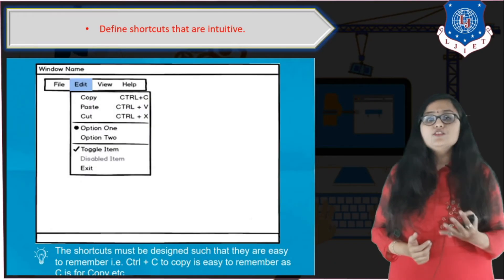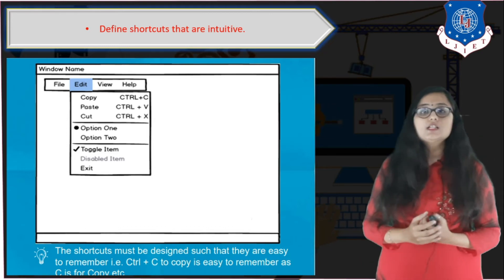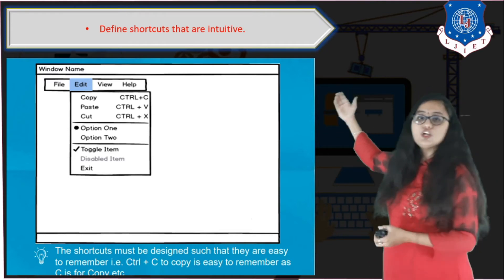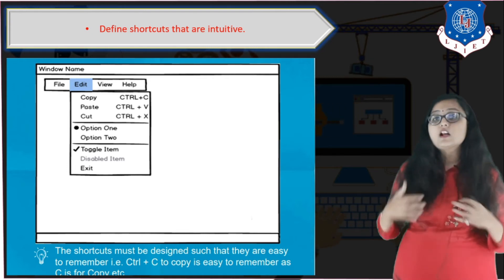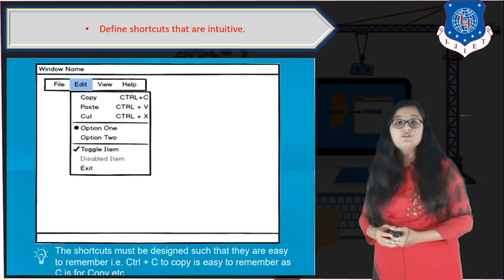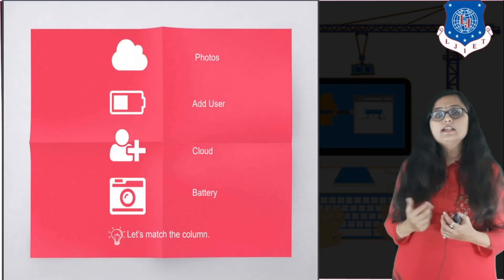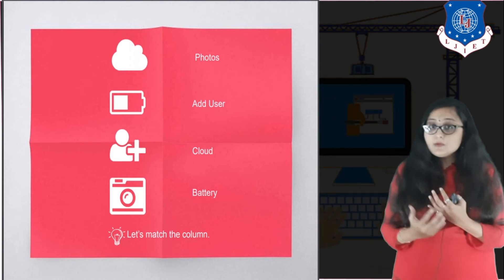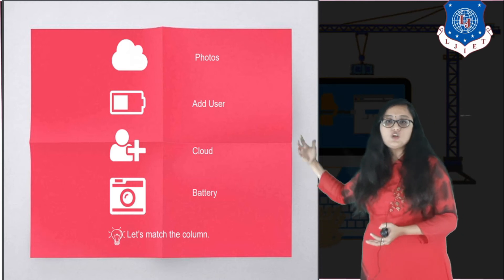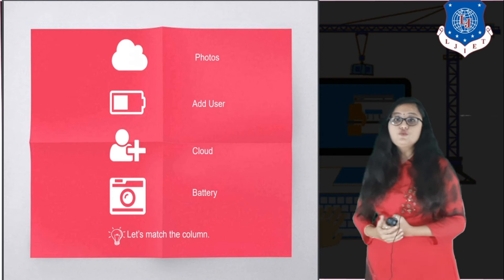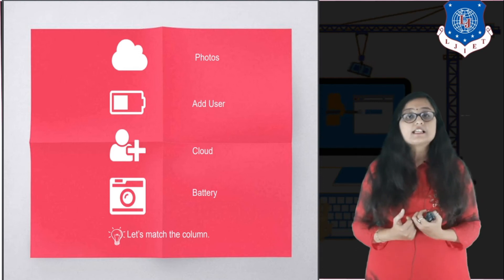The next technique is to define shortcuts that are intuitive. For example, the predefined shortcuts for copy, paste, and cut — Ctrl+C, Ctrl+V, and Ctrl+X — are very intuitive and all users are aware of them. You can incorporate such shortcuts in your web application as well. You can also use graphical symbols or images that are handy; for example, symbols for battery, cloud, user, and photos, so users can interact with symbols and perform required tasks more easily.